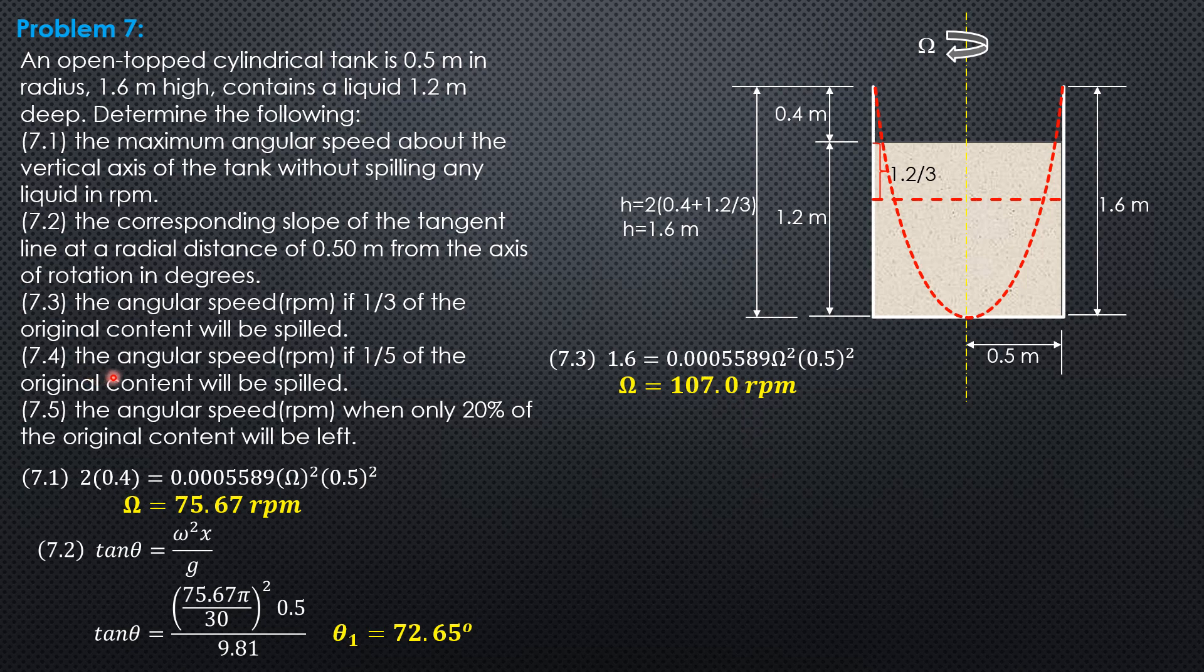Then 7.4 is almost the same as 7.3. But this time, one fifth of the original content will be spilled. So lesser in value. So this should be the figure for part 4. And this is only one fifth of 1.2, so 0.24. So if we double 2 times quantity 0.4 plus 0.24, that should be less than 1.6.